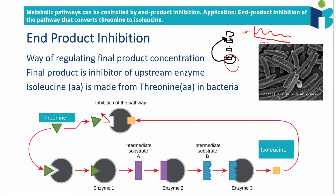We can apply end product inhibition to a particular metabolic pathway. Isoleucine and threonine are amino acids — remember how there are 20 different amino acids that you can work out from a codon table? Isoleucine and threonine are among those 20 amino acids.